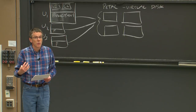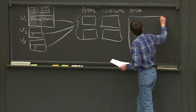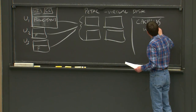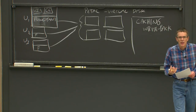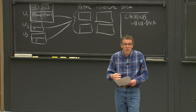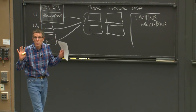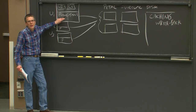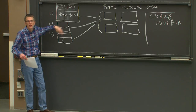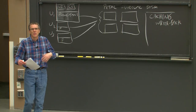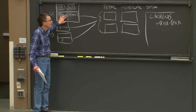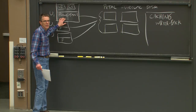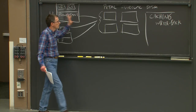Frangipani supports this kind of caching — furthermore, it supports write-back caching. This means that if I modify a file, create a file, delete a file, or do any other operation, as long as no other workstation needs to see it, those writes stay only local in the cache. If I create a file, initially the information about the newly created file — the allocated inode and the new directory entry — are just done in the cache. They're not written back to Petal until later.